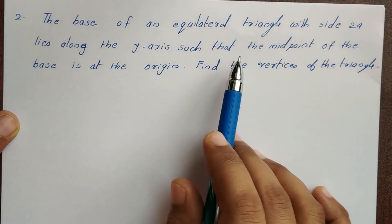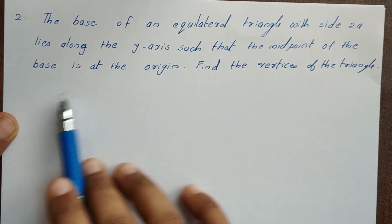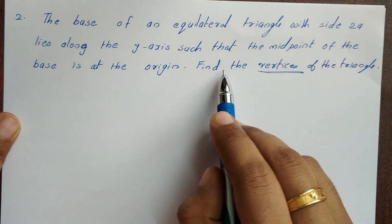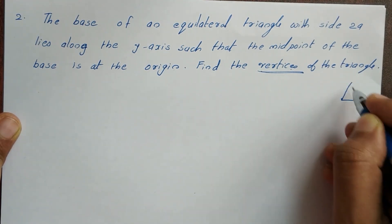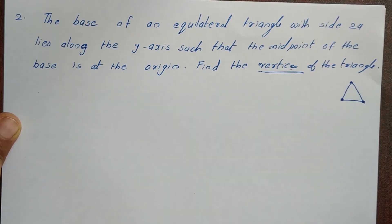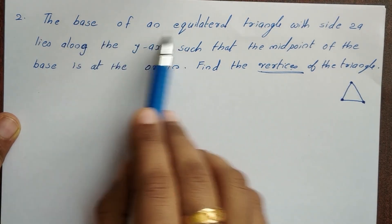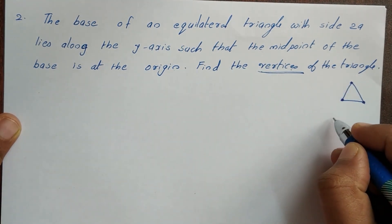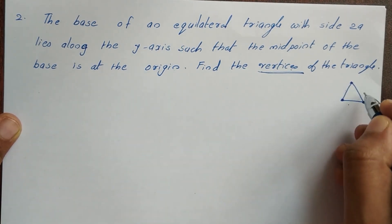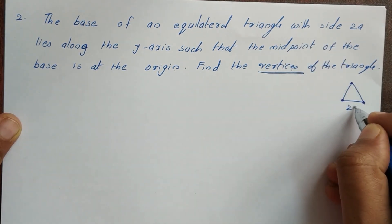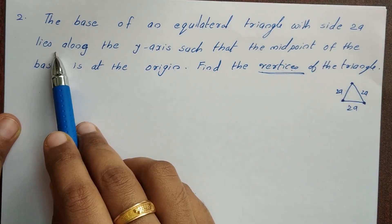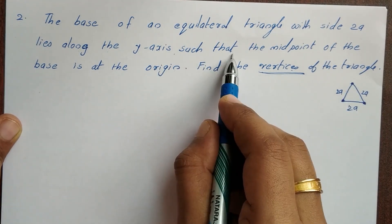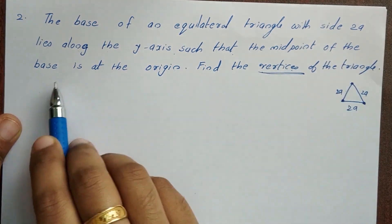Next question: The base of an equilateral triangle with side 2a lies along the y-axis such that the midpoint of the base is at the origin. Find the vertices of the triangle. This is the question. The equilateral triangle has three equal sides, each equal to 2a. The base lies along the y-axis with the midpoint of the base at the origin.